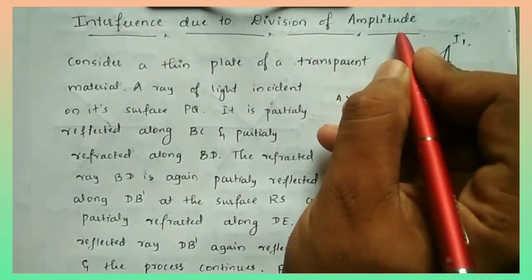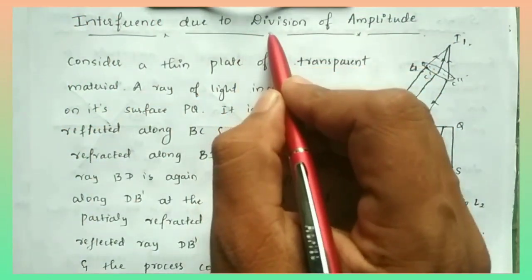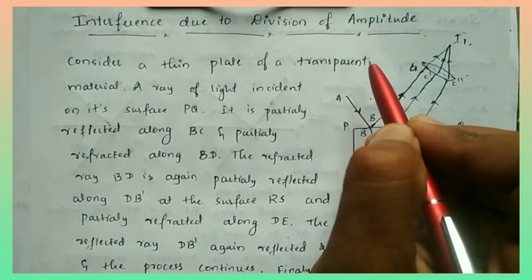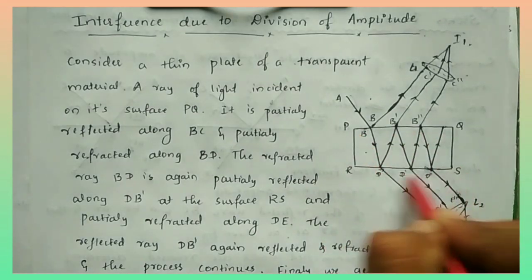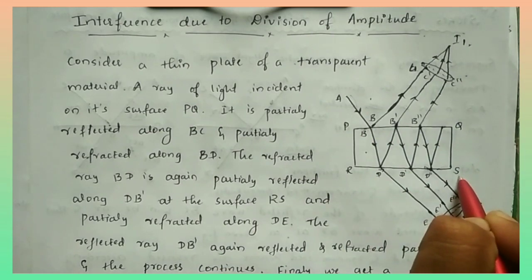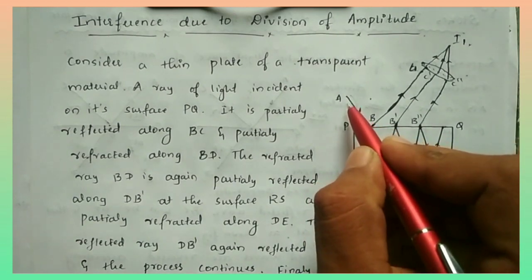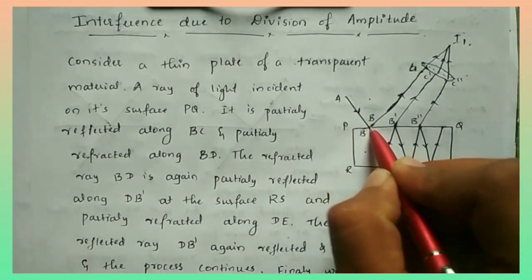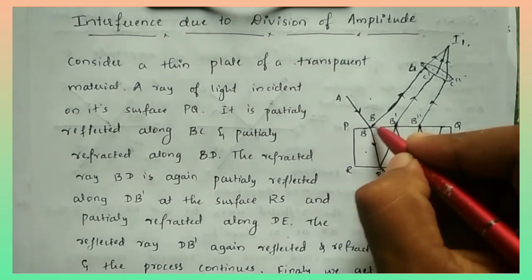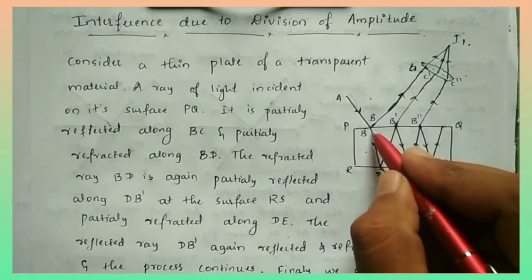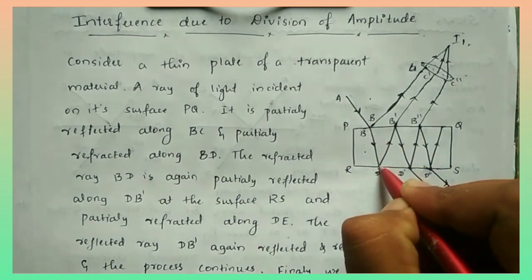Interference due to division of amplitude means we have to form the interference pattern by dividing the amplitude of an incident wave. Consider a thin transparent plate PQRS. A ray of light AB is incident on the surface PQ. This ray will be reflected back in the same medium and will be partially transmitted and refracted into the material.